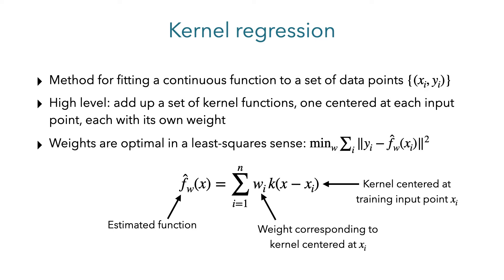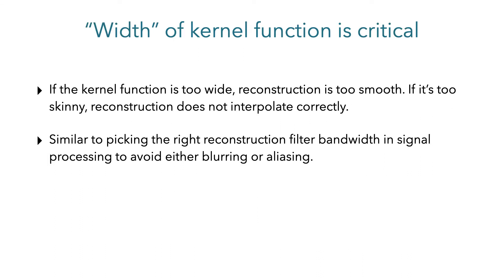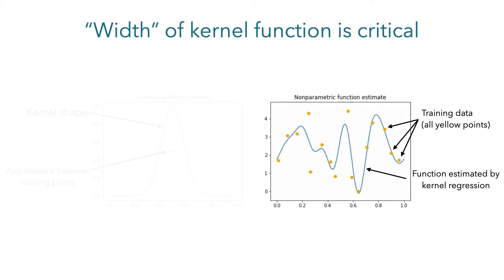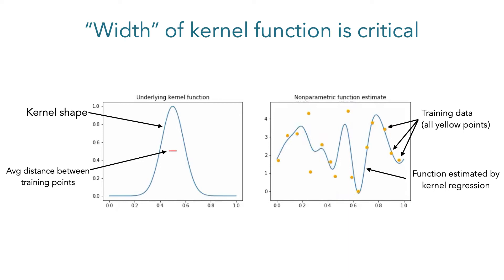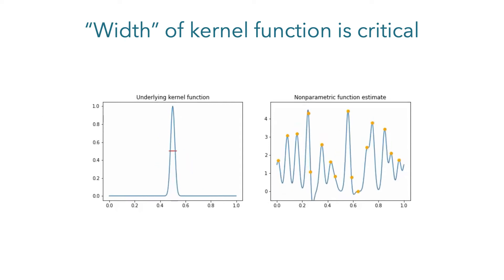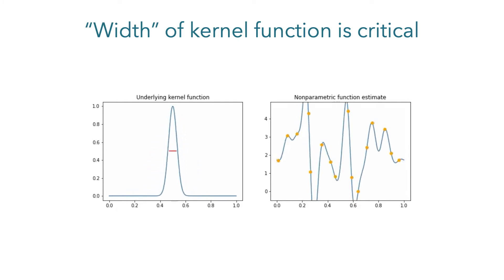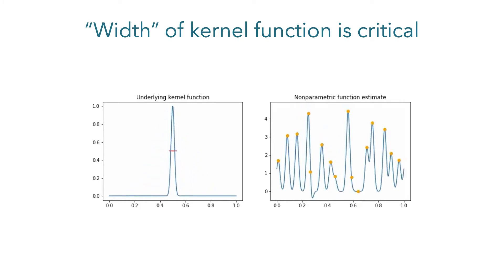Adding them all up together produces the continuous estimated function. These weight values w are set such that your function passes as closely as possible to all the input points in a least-squares sense. It's really critical to pick the right kernel function. If your kernel is too wide, you won't be able to represent high frequencies, and if it's too skinny, you'll end up overfitting to the input data. Here's a simple visualization of that effect when fitting a 1D function to these yellow data points. The blue line shows the kernel regression estimate using the kernel shown on the left. If we vary the width of the kernel function, we can go between a smooth, low-frequency, under-fit function and an over-fit function that doesn't interpolate well between the input data points.